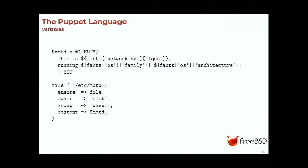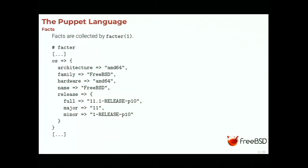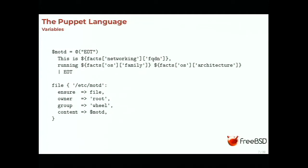Remember, the agent sends its facts to the Puppet master at the start of the communication. These facts are key-value pairs; for example the OS fact has architecture and family sub-keys. So while this snippet of code is the same for many nodes, each node will have a different MOTD file.